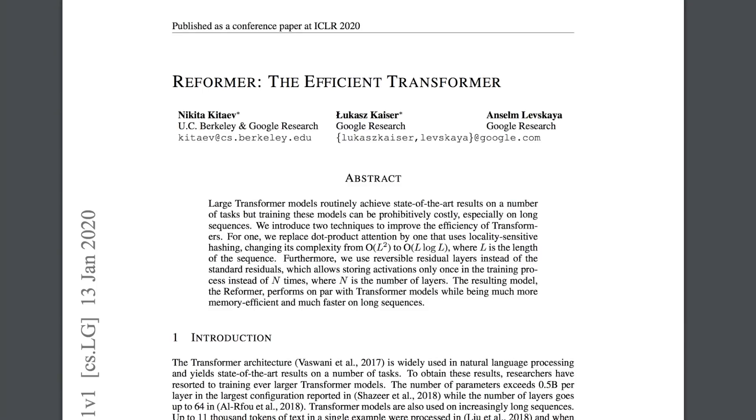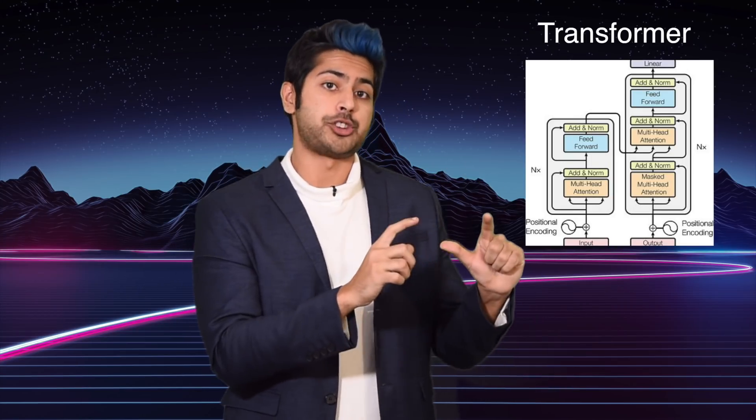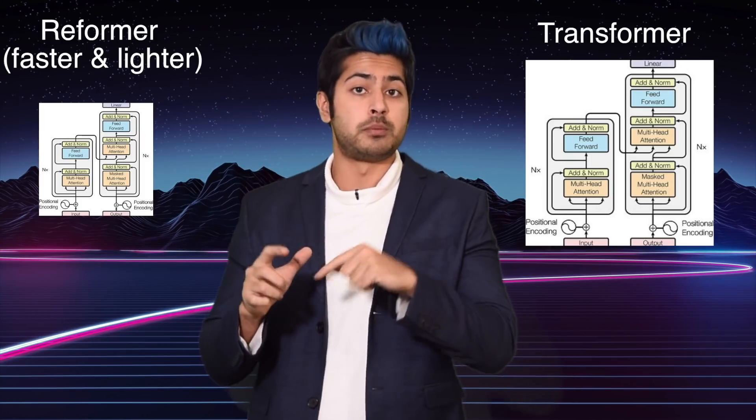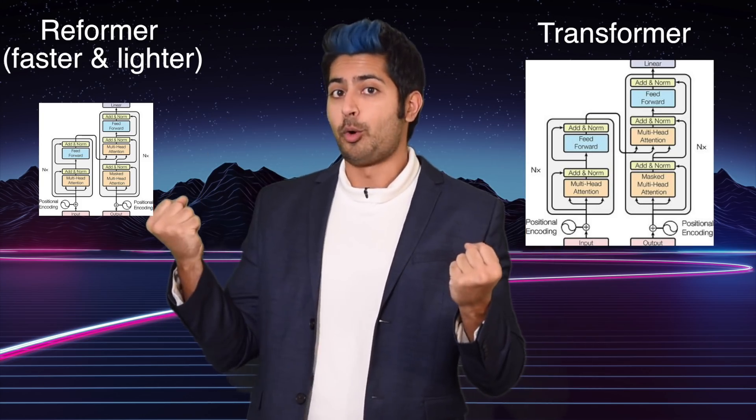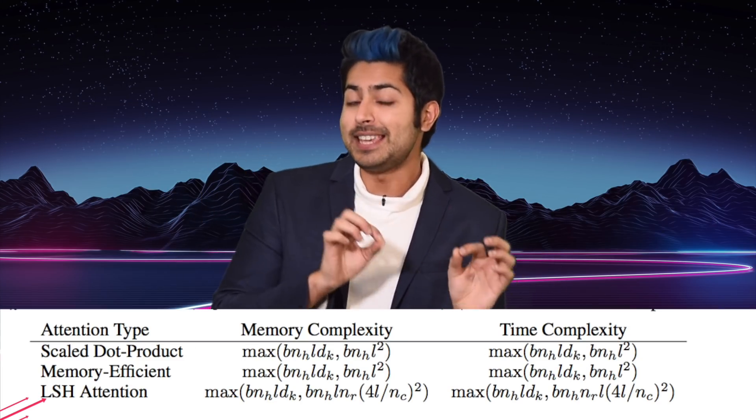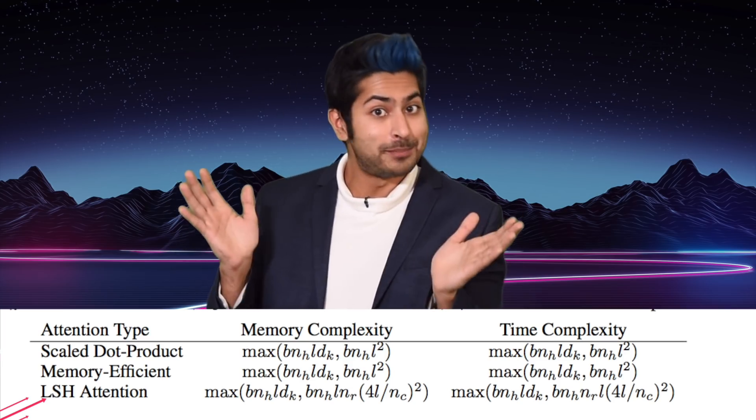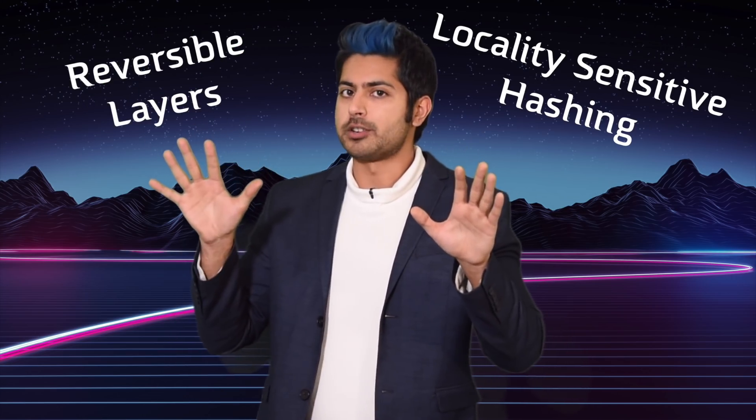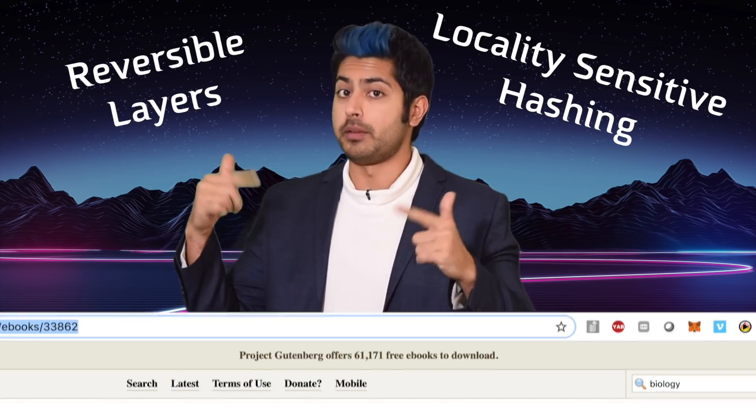So, now it's 2020 and Google has released the Reformer architecture. They've re-engineered the Transformer architecture to be much more efficient in terms of speed and storage. Or in more computer science-y terms, its space and time complexity are much better. To do this, they used two techniques, locality-sensitive hashing and reversible layers. Let's dive into why they used both of them.